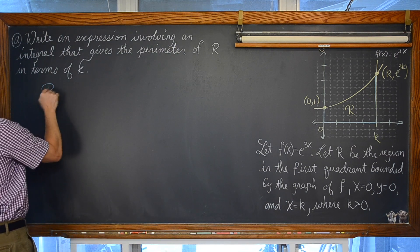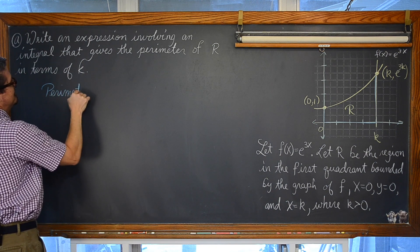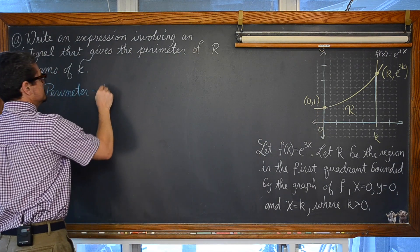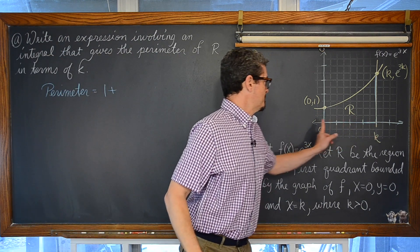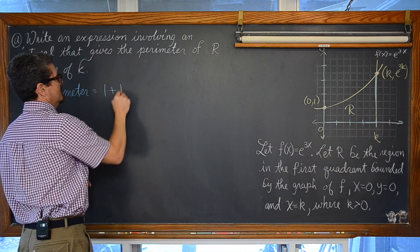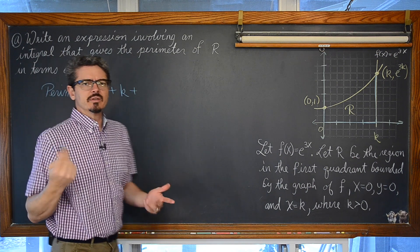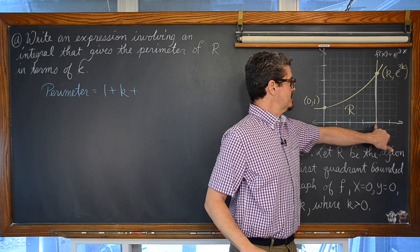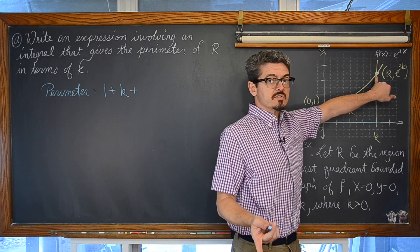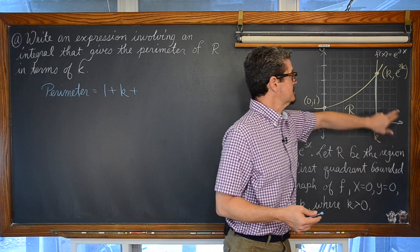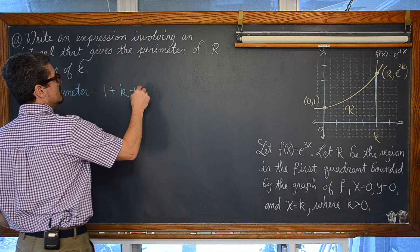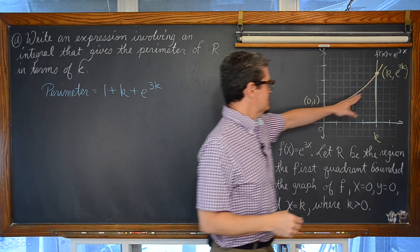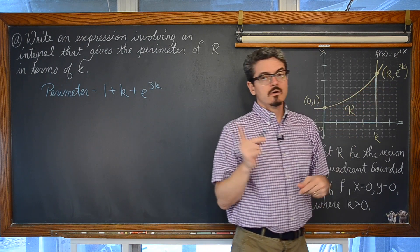So our perimeter is equal to a vertical distance of one, a horizontal distance of from zero to k. Hopefully you pause the video by the way and try these on your own before I go ahead and give you a solution. We have a vertical line segment which is, well, that distance from the x-axis to the graph is defined by the function itself. So we have a vertical distance of e to the 3k power. And then we will get to the calculus part of this. How long is that yellow arc length?